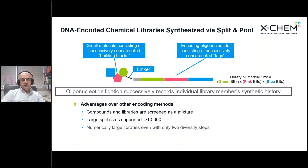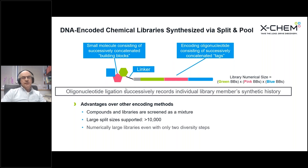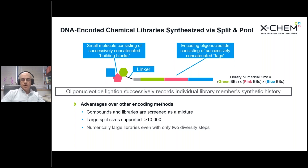The advantage of this methodology is that compounds and libraries are screened as a mixture, and therefore very large numbers of compounds can be made and screened in parallel. Large split sizes are supported by our variant of the technology — up to split sizes of 10,000 — and that means we can achieve numerically large libraries even with only two diversity steps. For the two-cycle libraries, which only have a pair of building blocks displayed, the properties are more attractive because the average mass of those compounds is lower, very often in the high 300s or low 400s.